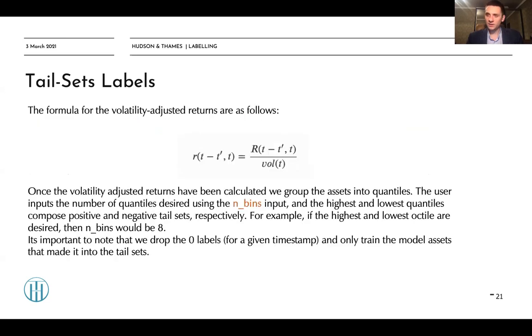So as we have discussed, you can either use raw returns or volatility adjusted returns. The volatility adjusted return is just the daily return which is divided by the volatility estimate. So once the volatility adjusted returns have been calculated, we need to group the assets into quantiles. The user inputs the number of quantiles desired using n-bits input. And the highest and lowest quantiles compose positive and negative tail sets respectively. So for example, if the highest and lowest octiles are desired, then n-bits would be 10.